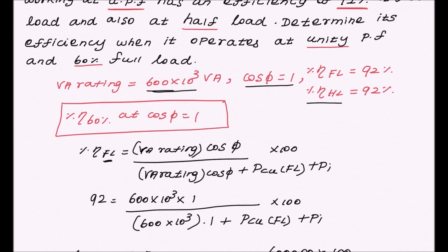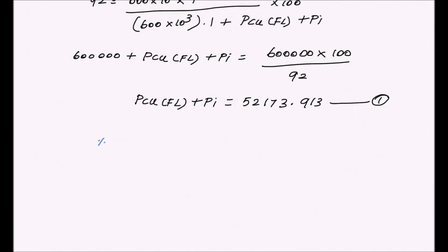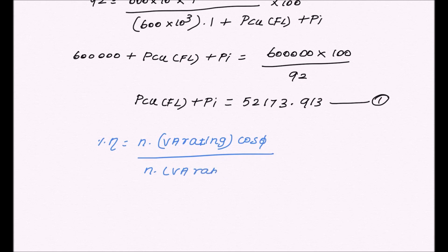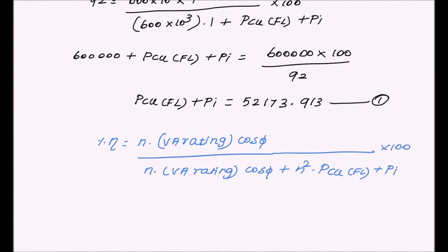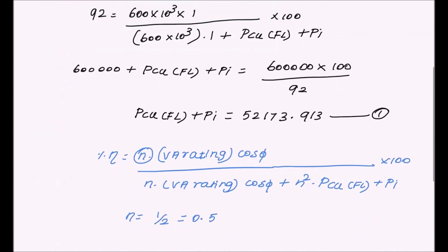The efficiency at half load is given as 92%. For fractional load, the percentage efficiency formula is: (N × VA rating × cos φ) divided by (N × VA rating × cos φ + N² × full load copper loss + iron loss) × 100, where N is the fraction of the load. For half load, N = 0.5. At half load, efficiency is 92%, power factor is 1, and VA rating is 600 × 10³.